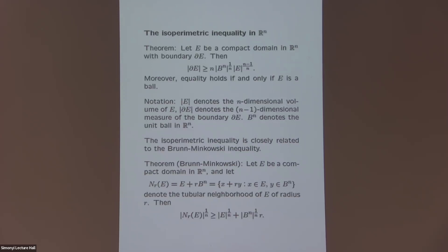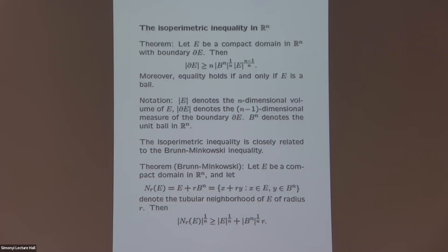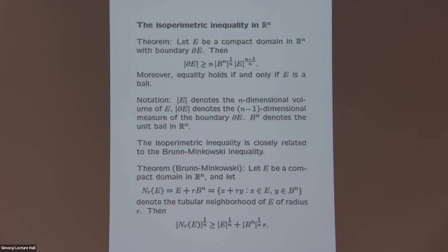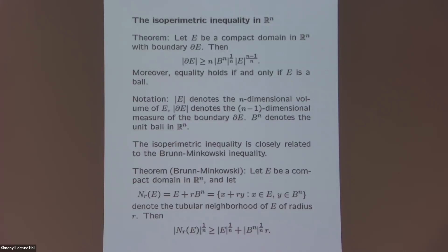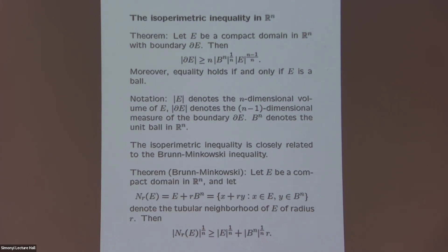Suppose that we have a compact domain E with smooth boundary. Then we can bound the measure of the boundary of E from below by the scaling invariant power of the volume, with a constant that depends only on the dimension, given by n times the volume of the unit ball to the power 1 over n. This inequality can be generalized to more general sets — you don't need E to have smooth boundary; you can generalize it to Caccioppoli sets, for example.